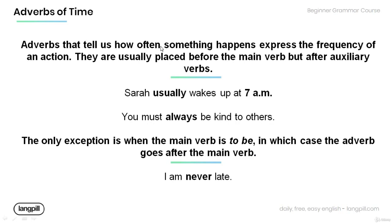Adverbs that tell us how often something happens express the frequency of an action. They are usually placed before the main verb but after auxiliary verbs. For example: 'Sarah usually wakes up at 7 a.m.' — the adverb 'usually' is placed before the main verb 'wakes.' But in the sentence 'You must always be kind to others,' the adverb 'always' comes before the auxiliary verb 'be,' while the main verb comes after the auxiliary verb.